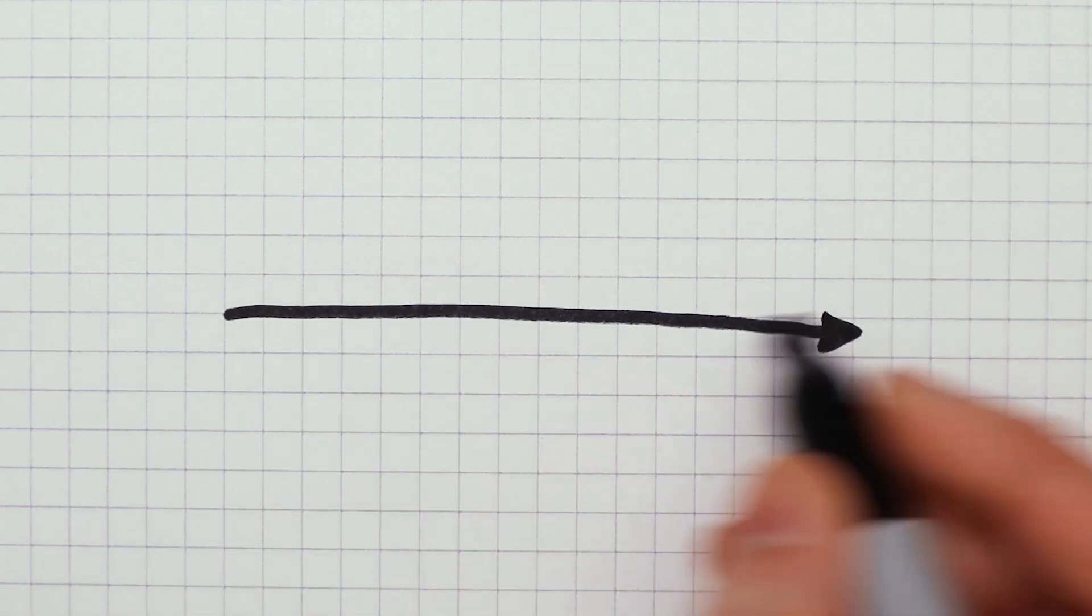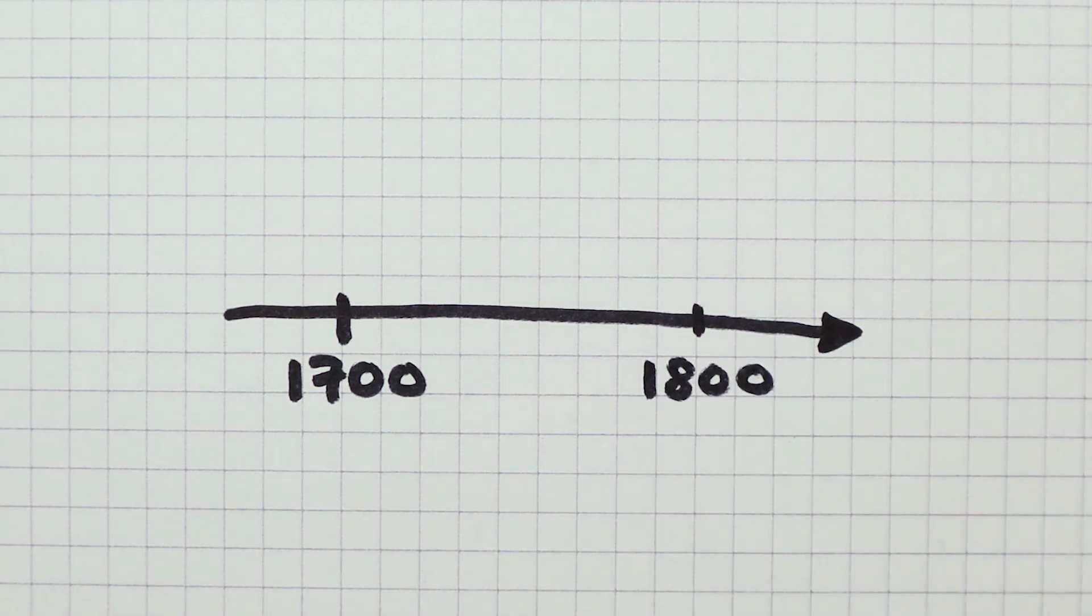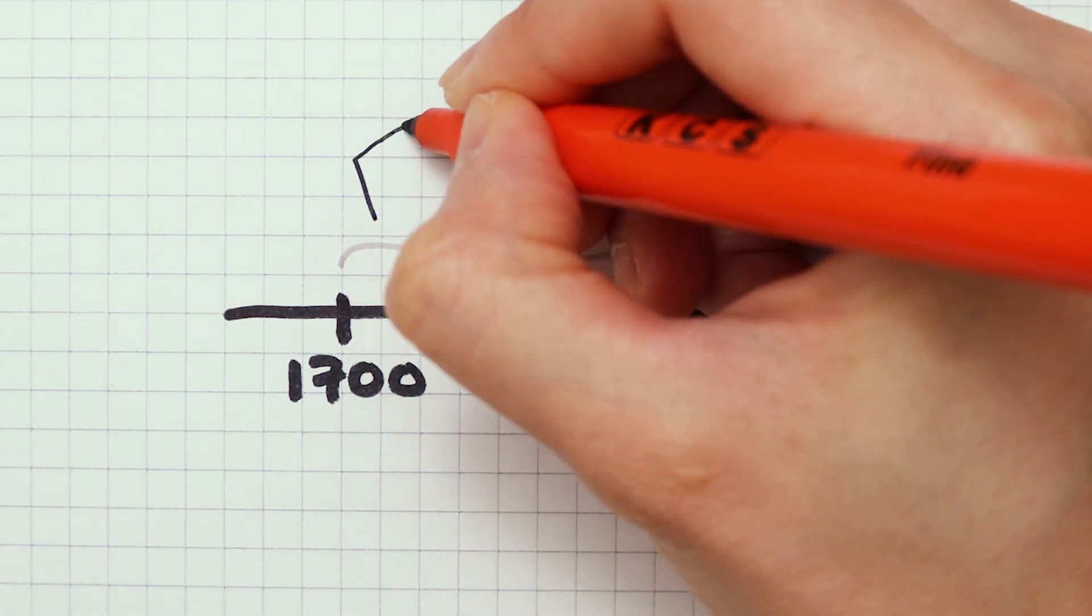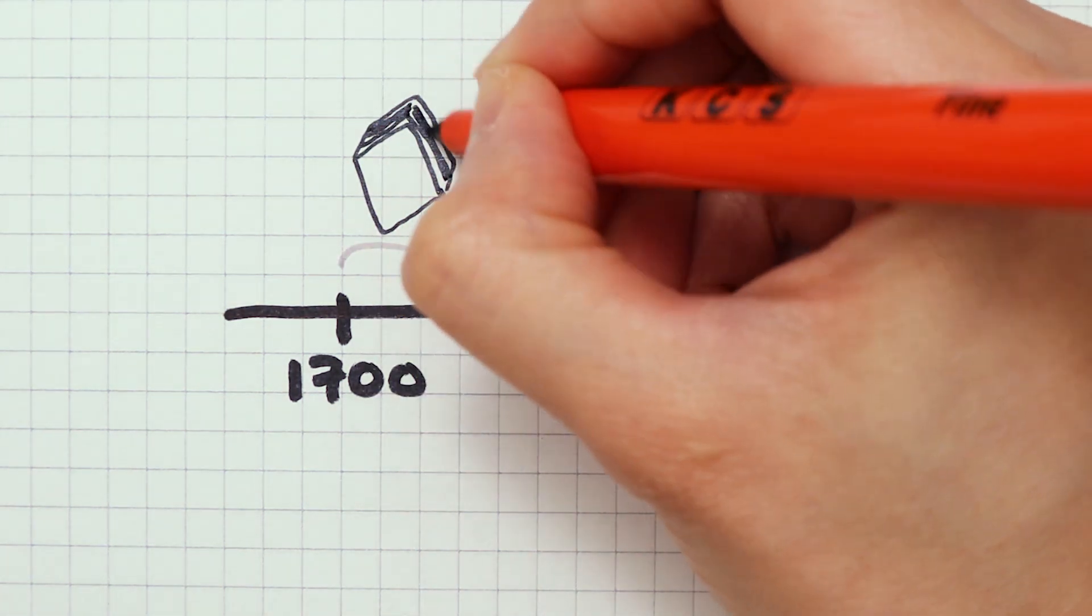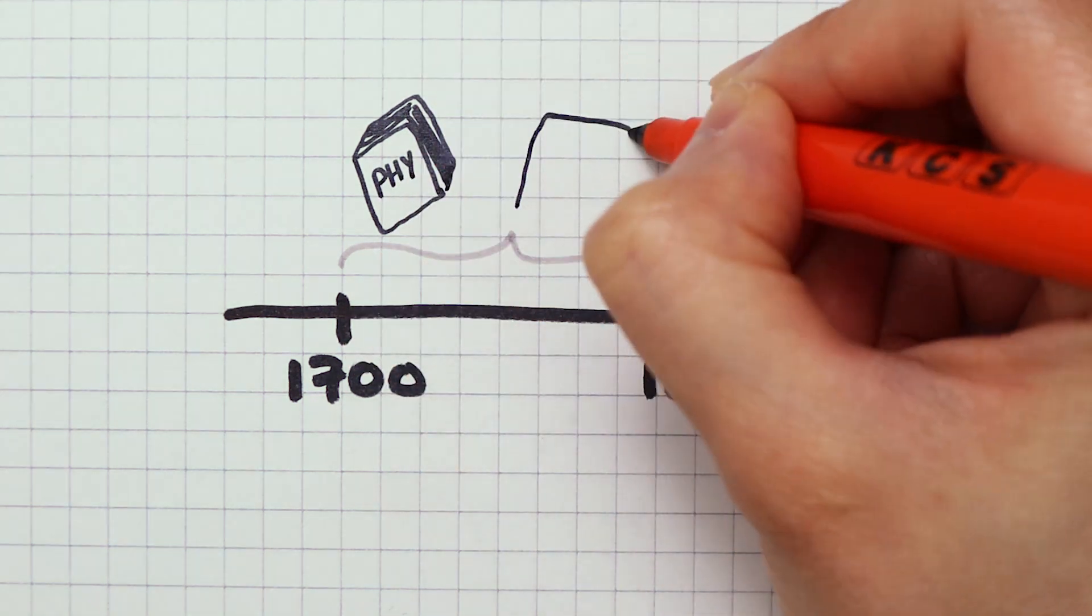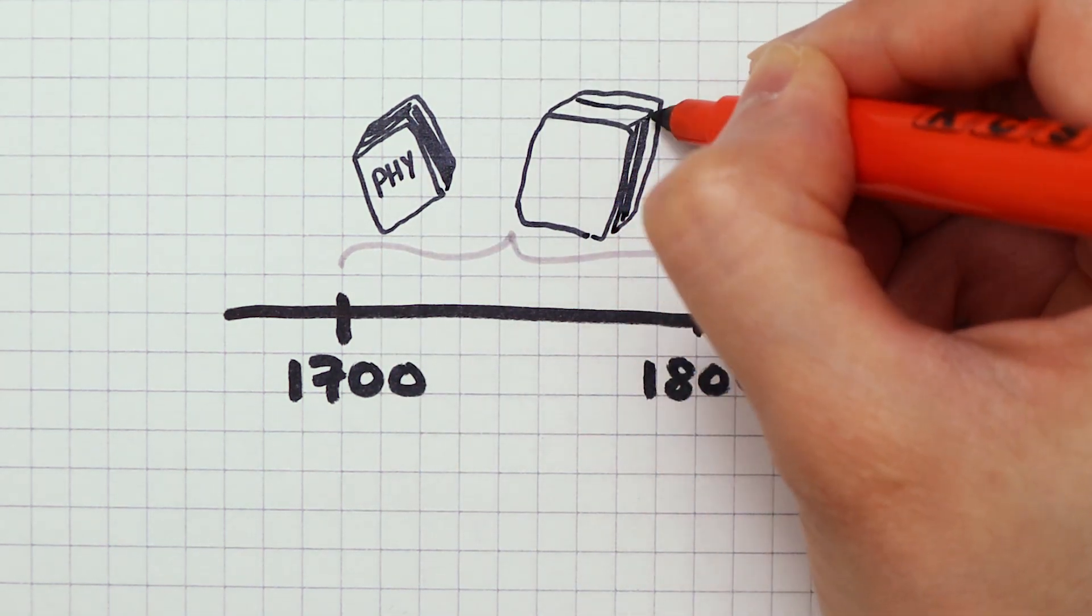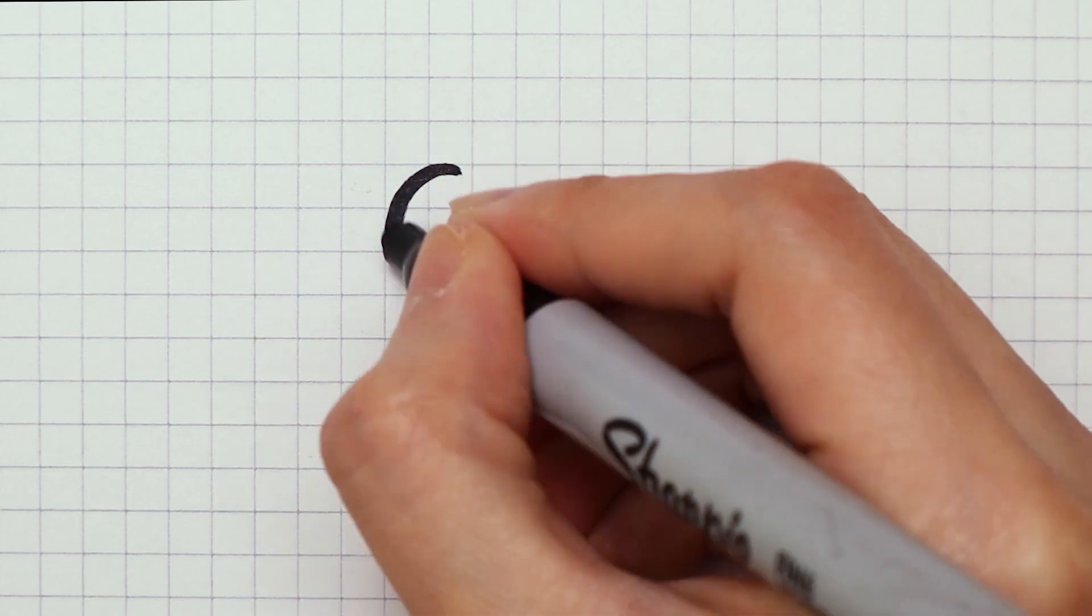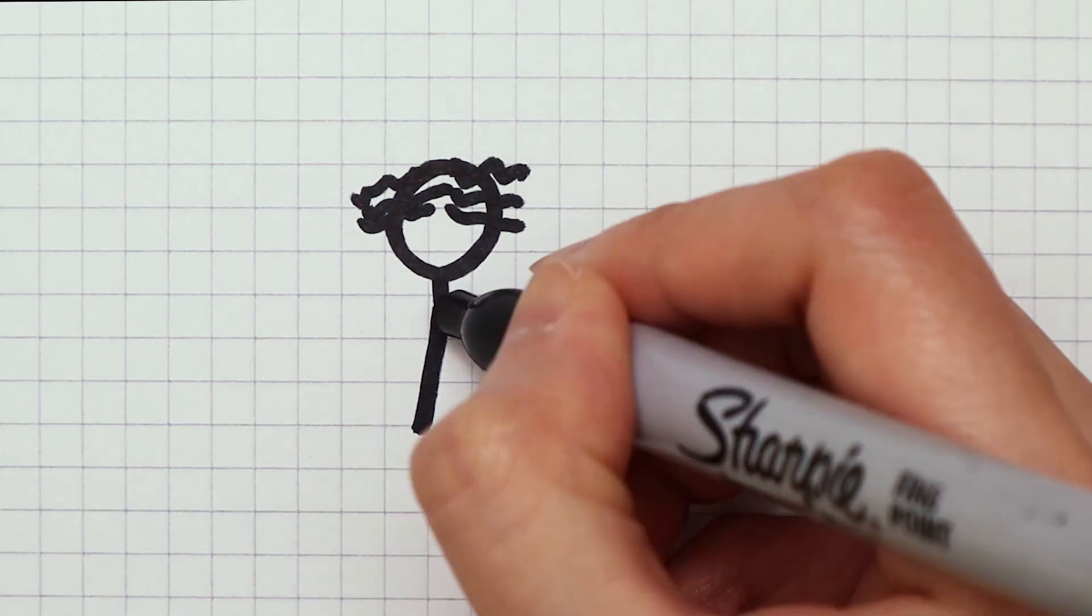That's because between the 1700s and 1800s, scientists had already written tons of rules and books using the conventional current. It's just too much of a hassle for scientists to rewrite all these books and all these rules.